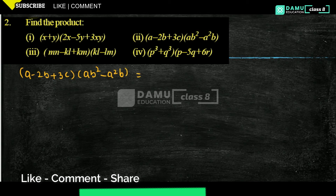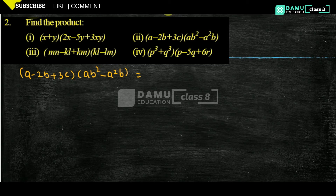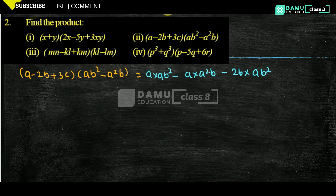We are going to write, first one: a into ab², minus a into a²b. Then second one: minus 2b into ab², then minus into minus will become plus 2b into a²b. The next one is: plus 3c into ab², plus into minus is minus 3c into a²b.